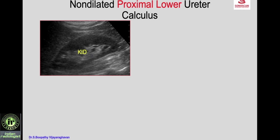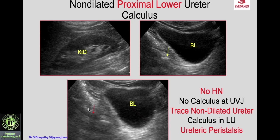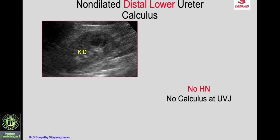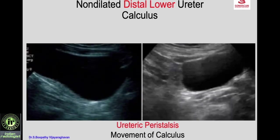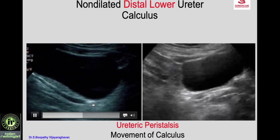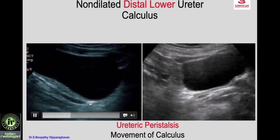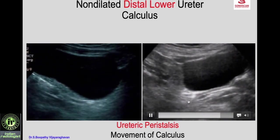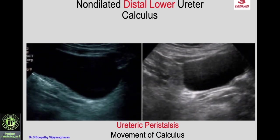In the lower ureter again: no hydronephrosis, no calculus at the UVJ, but there is a suspicious calculus in the distal ureter. Wait, see the ureter distension, and then see the calculus in the distended ureter confirming it is a ureteric calculus. For the distal-most ureter — no hydronephrosis, no calculus at the UVJ — you wait, see distension of the distal ureter, and see the calculus within it because of ureteric peristalsis. Both signs — ureter distension and calculus movement with peristalsis — confirm ureteric calculus and help pick up calculi in non-dilated ureters.